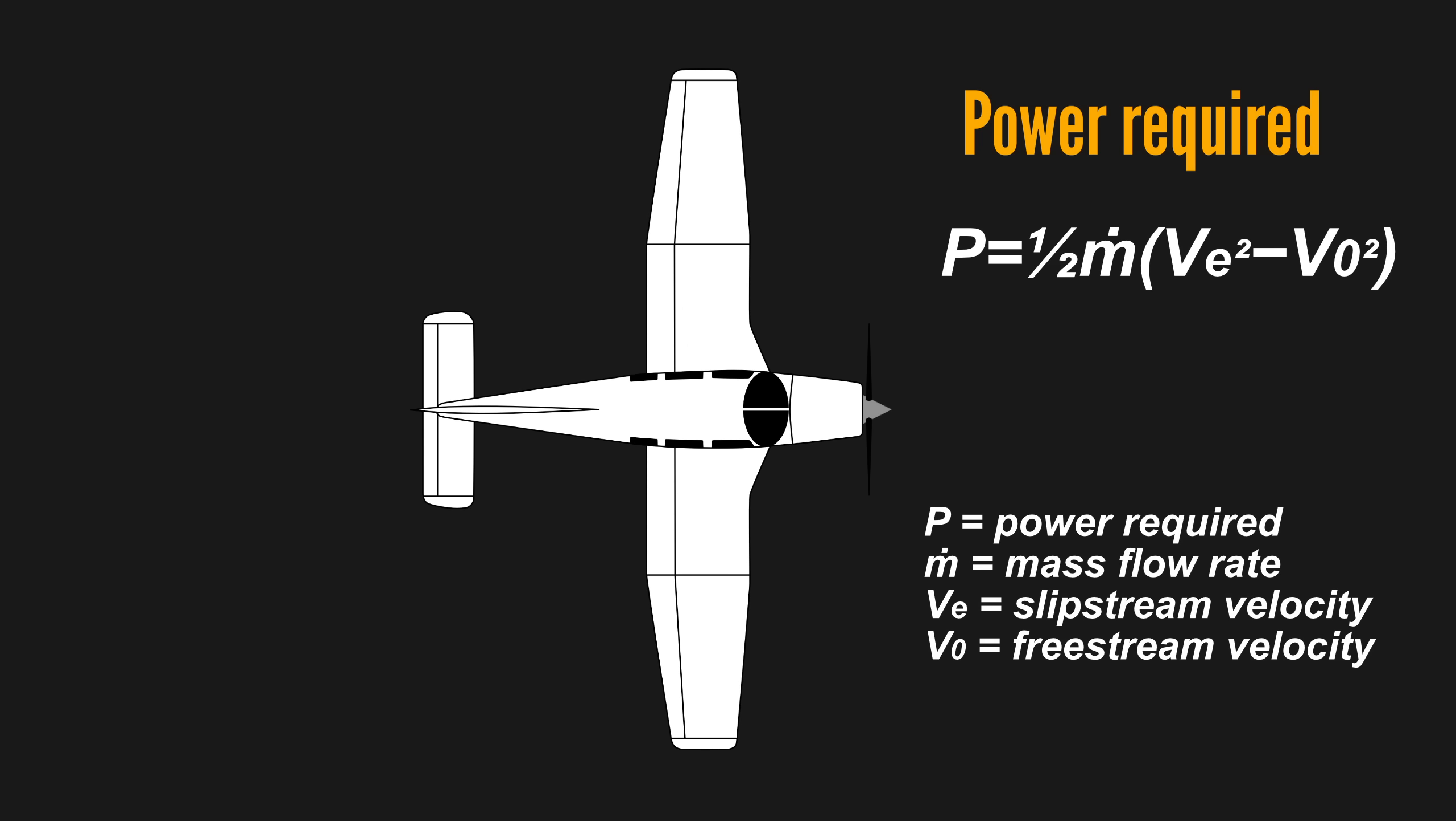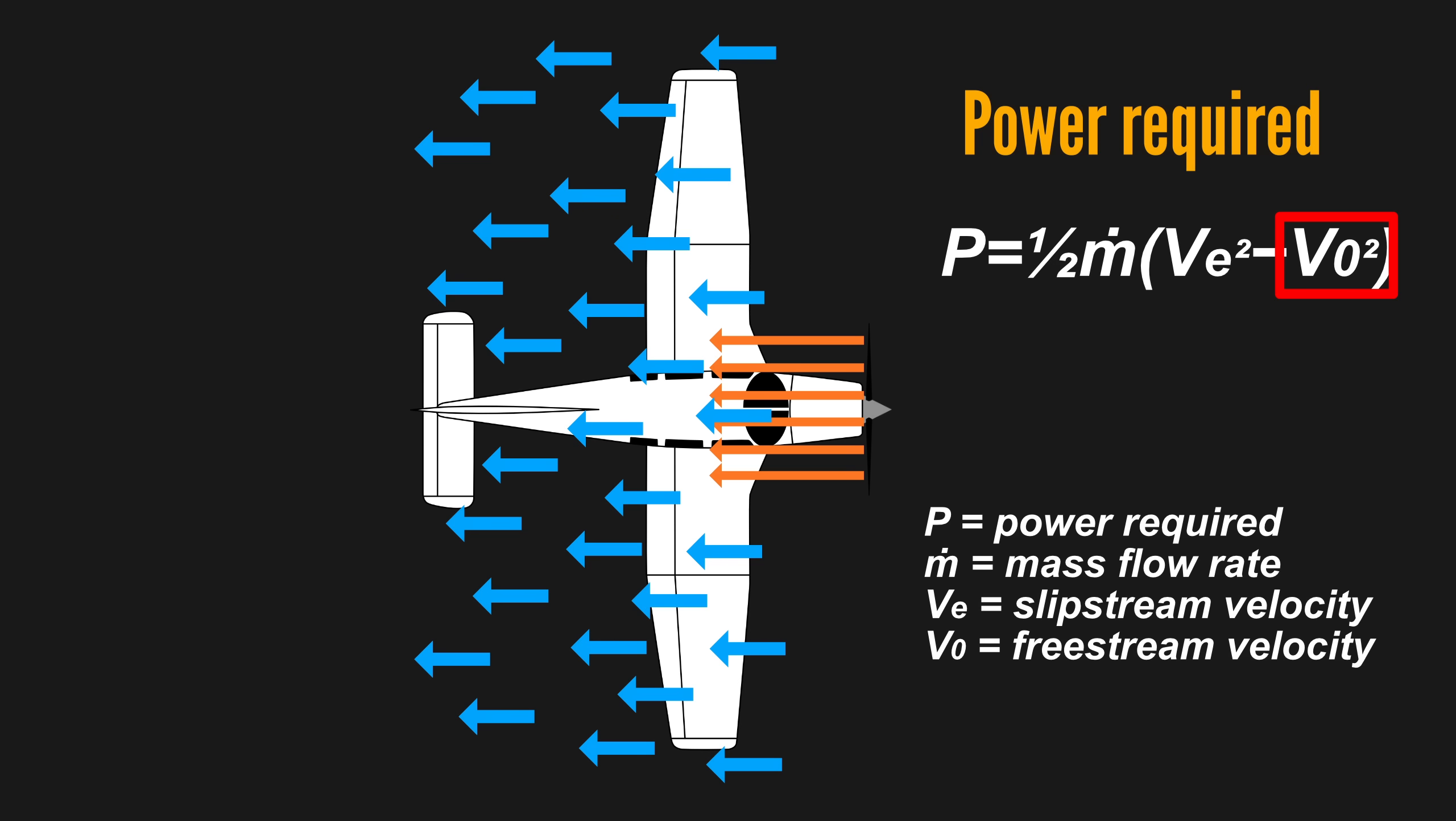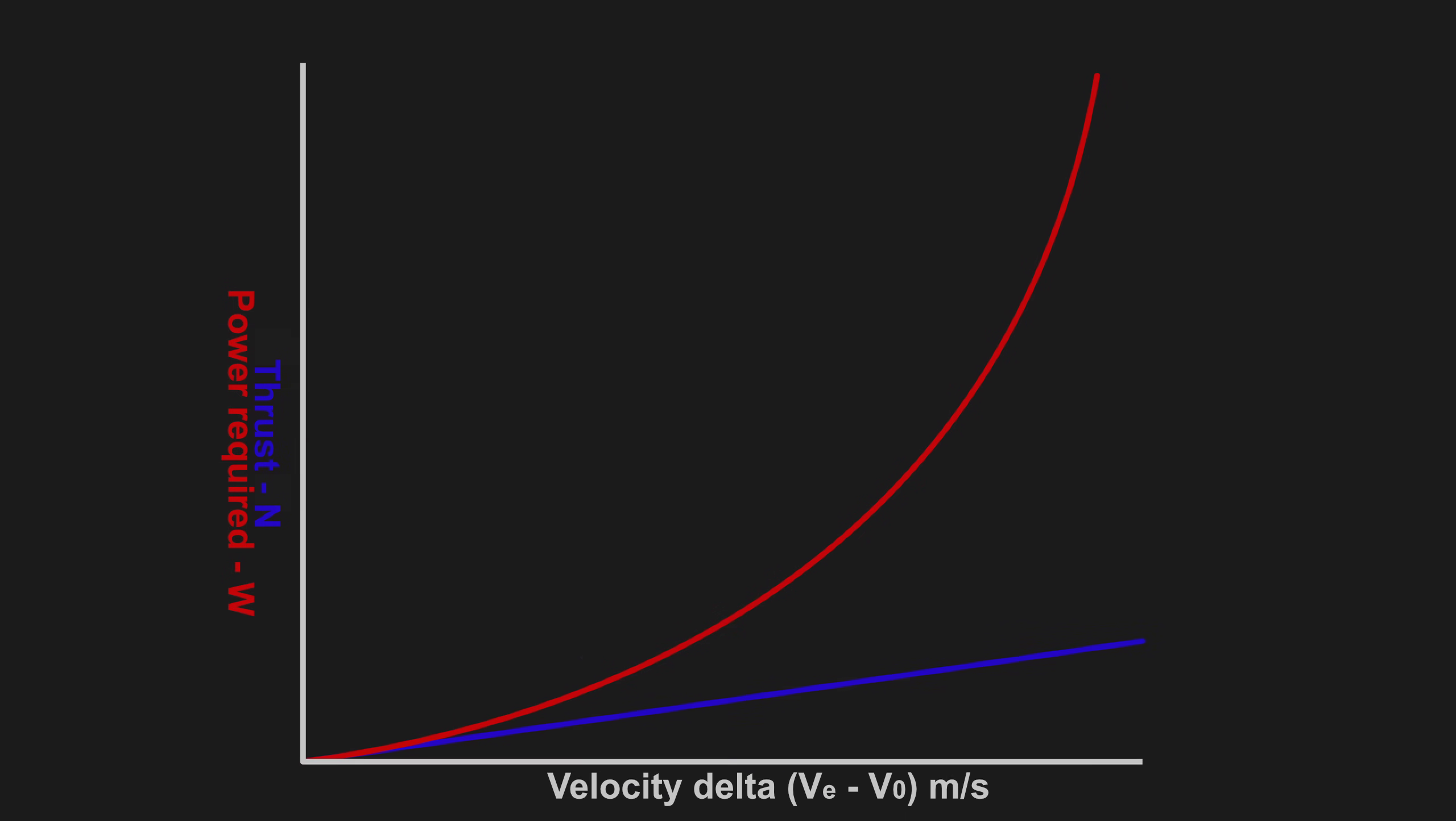However, moving air back as fast as possible is not a very efficient way of creating thrust with a propeller, as described by momentum theory. The engine power required to generate thrust is the square of the velocity of the prop wash minus the square of the velocity of the freestream air times half of the mass airflow rate. Thrust thus increases linearly as the difference in velocities increase, but power required to produce that thrust increases with the square of the velocity difference.